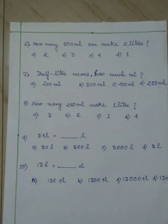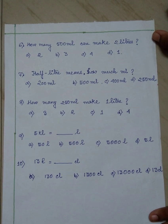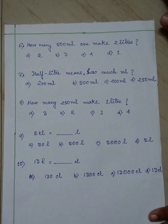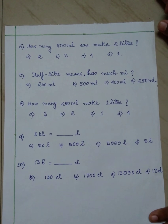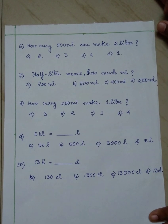Here the sixth number is, how many 500 millilitre can make 2 litres? Options are 2, 3, 4 and 1. You have to take the correct option.